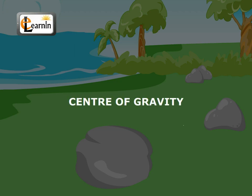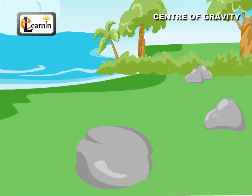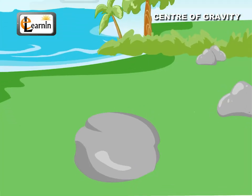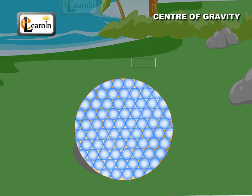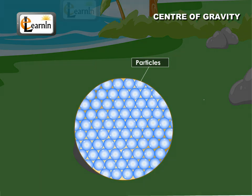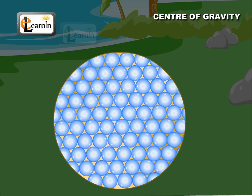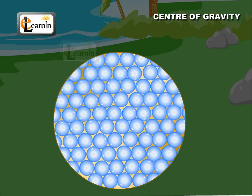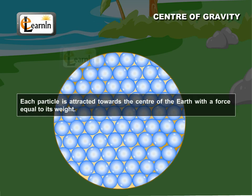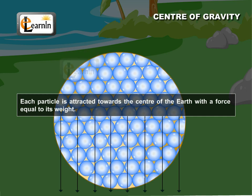Center of Gravity. Every body is made up of a large number of particles in a rigid body. The particles are held together in a fixed position relative to one another. Each particle is attracted towards the center of the earth with a force equal to its weight.